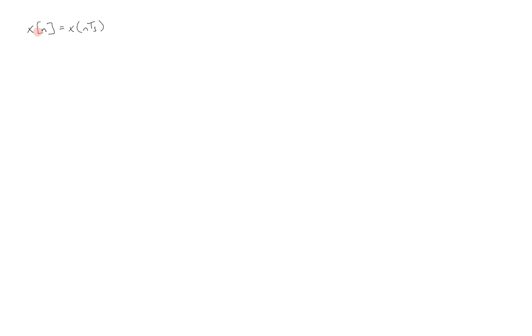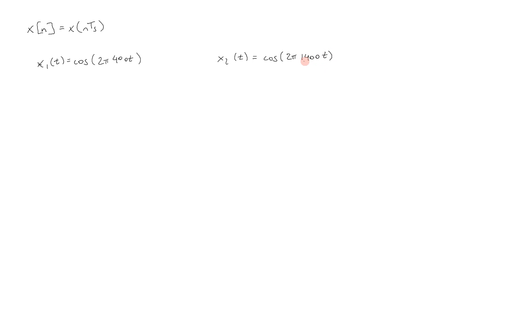Now let's examine this phenomenon mathematically. We defined before that x[n] is equal to x(n · Ts), where x[n] is the sampled signal and we plug integer n times the sampling period Ts into the continuous-time signal. Suppose that x1(t) = cos(2π · 400 · t), a 400 Hz cosine in the format cos(2πFt). And let's say that x2(t) = cos(2π · 1400 · t), so this is a 1400 Hz cosine. We will sample at Fs = 1000 Hz.